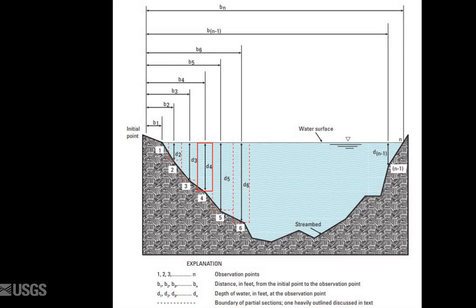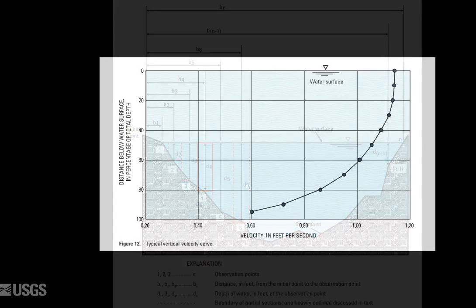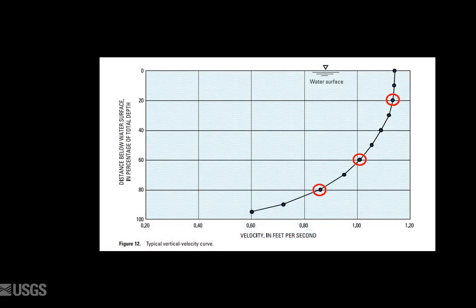The depth will be determined by the ADCP. With a point velocity meter, velocity readings are collected at discrete points, some combination of 2 tenths, 6 tenths, or 8 tenths of the depth, and a vertical velocity curve used to determine a mean velocity for the station.